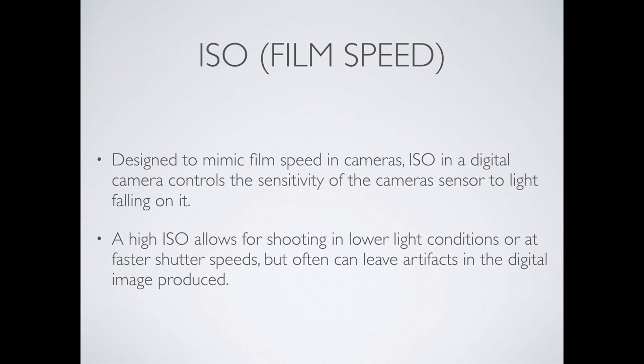ISO is called film speed. Way back when, if you had a real camera with film, you could buy film based on its sensitivity. You'd buy ISO 100 film as a reasonably standard option. If you were going to shoot something in high speed, you might get ISO 800 film — it was more light sensitive. In the world of digital cameras, we don't buy film anymore; we just tell the sensor to be more or less sensitive. Most of the time your camera does it automatically and you don't even know about it.